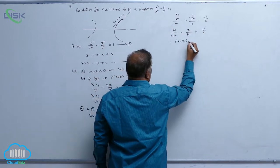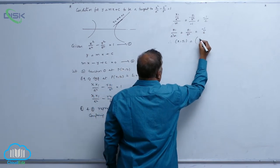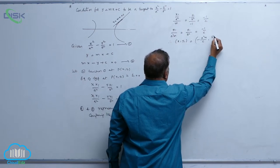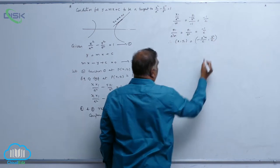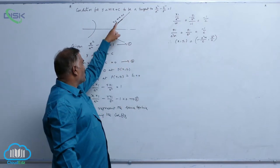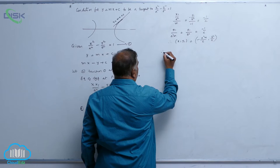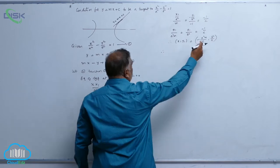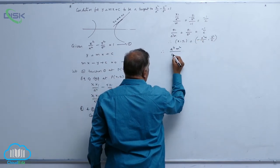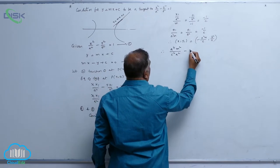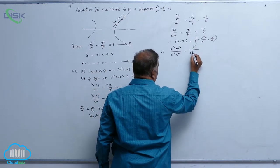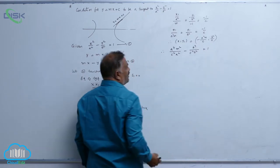From this, the point P(x₁, y₁) equals (-a²m/c, b²/c). Now this point lies on the curve, so substitute the point into equation 1. We get a⁴m²/c² divided by a² minus b⁴/c² divided by b² equals 1.